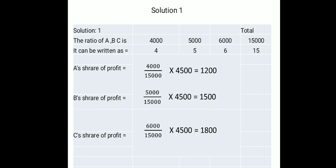In Example 1: A, B, and C are business partners with capitals of 4000, 5000, and 6000 respectively, and the total profit is 4500. You have to divide the profit among them according to their investments.